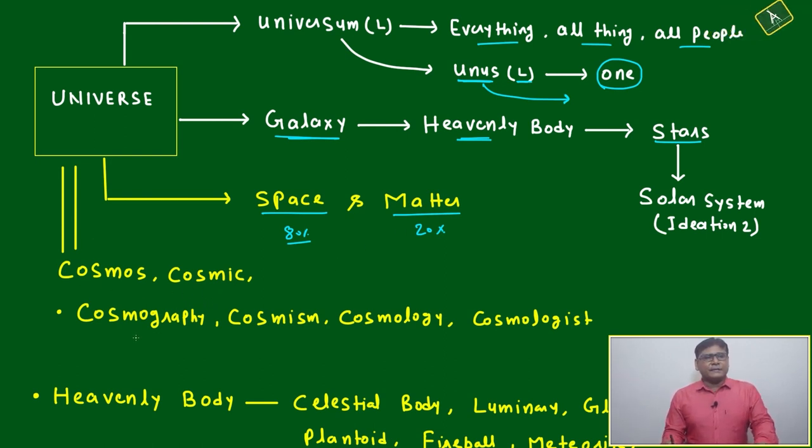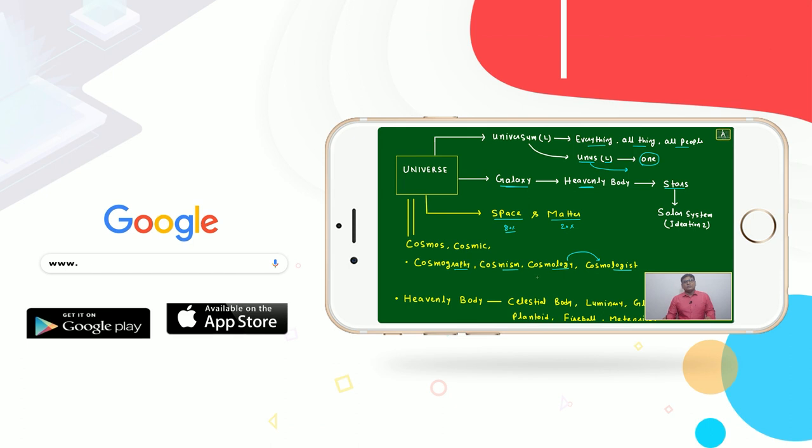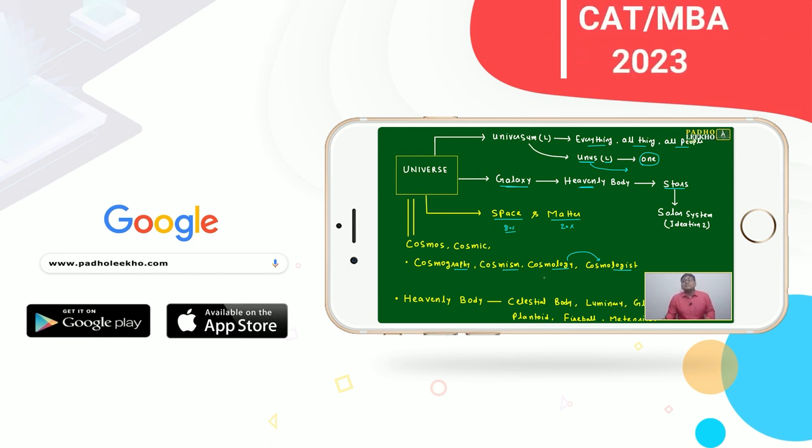Another word of universe is cosmos, cosmic. Anywhere word related to cosmos is coming you can just make a sense it is related to universe: cosmography, cosmism, cosmology, cosmologist. Cosmology is a science or branch of the science which is dealing with the universe, which studies about the universe. Cosmologist - like who was studying physics: physicist - same way. Cosmography, cosmism, all these words related to cosmos.